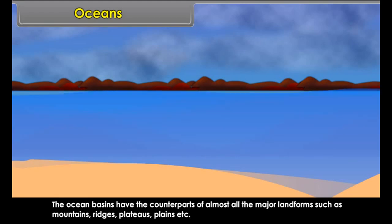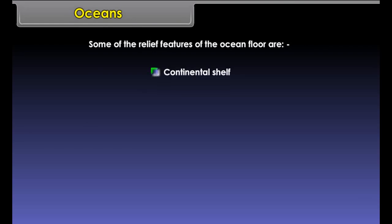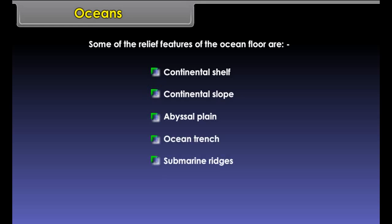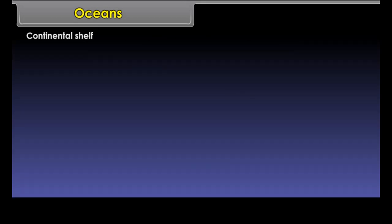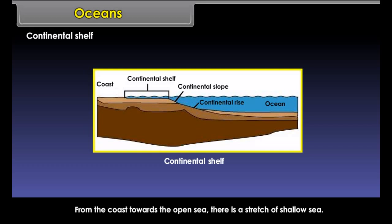Oceans are huge reservoirs of water on the Earth's surface. The ocean basins have the counterparts of almost all the major landforms, such as mountains, ridges, plateaus, plains, etc. Some of the relief features of the ocean floor are continental shelf, continental slope, abyssal plain, ocean trench, submarine ridges, and islands.